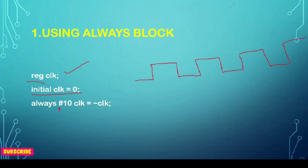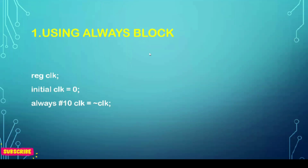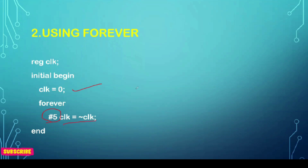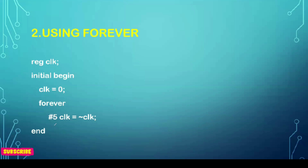Now let's see how we can write the code for clock generation using a forever block. Initially the clock is set to zero, and you use #5 — you can also use #10, it depends on the clock frequency and time period you want. We are toggling the clock: after five units it becomes one, after five more units it becomes zero, and so on continuously. This gives us a clock signal with a 50 percent duty cycle.